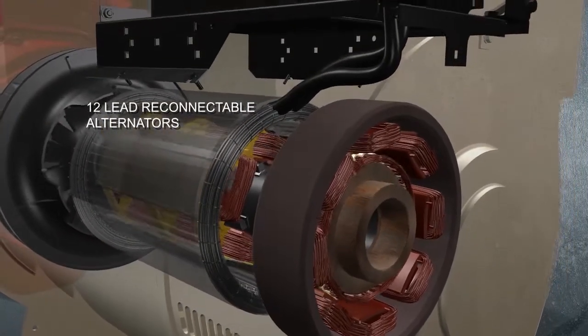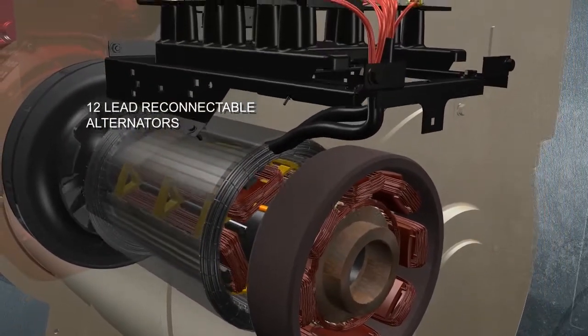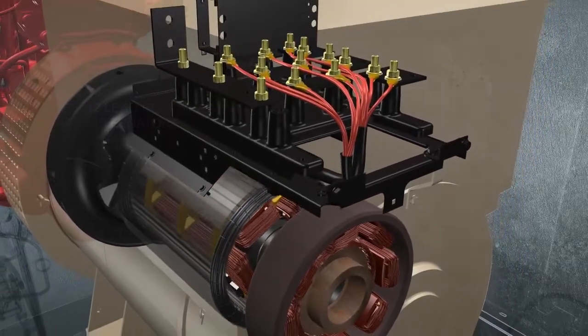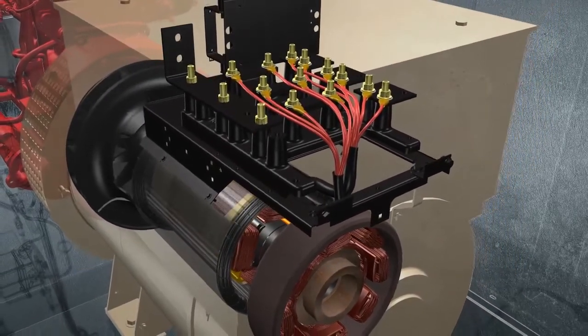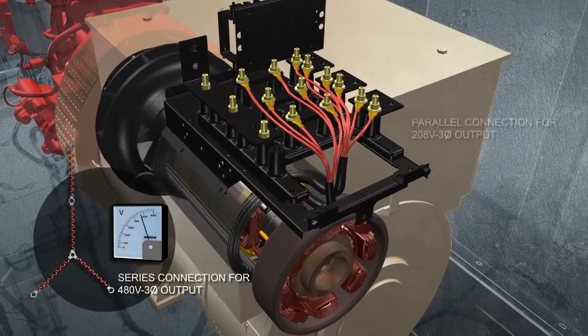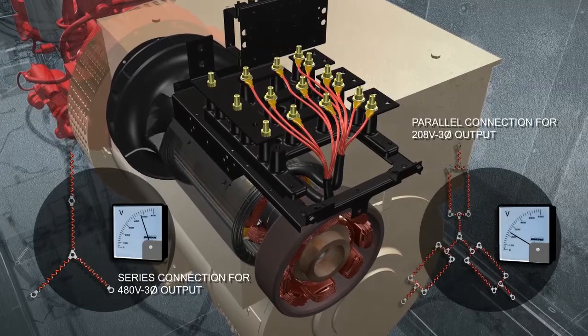Doosan Mobile Generators also include alternators with six coils wound into the stator. This provides three voltage sources or phases. Because each phase combines two coils of wire, the sources can be connected in series for high voltage applications or in parallel for low voltage needs.